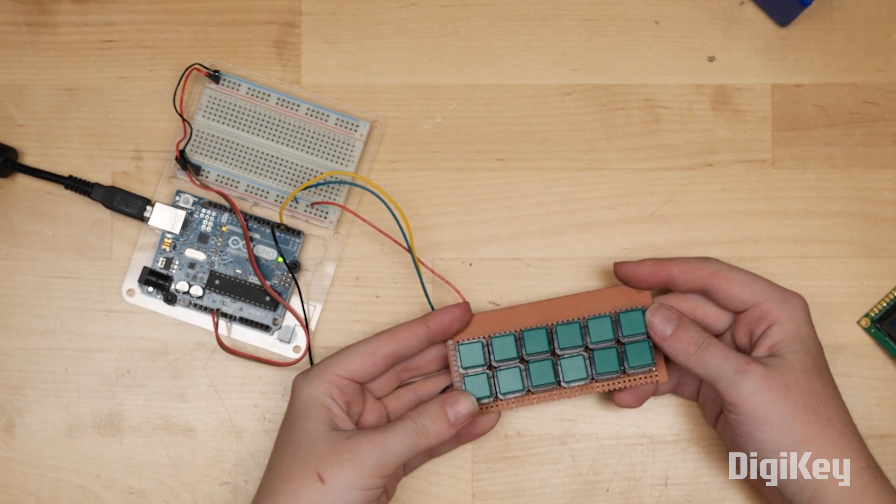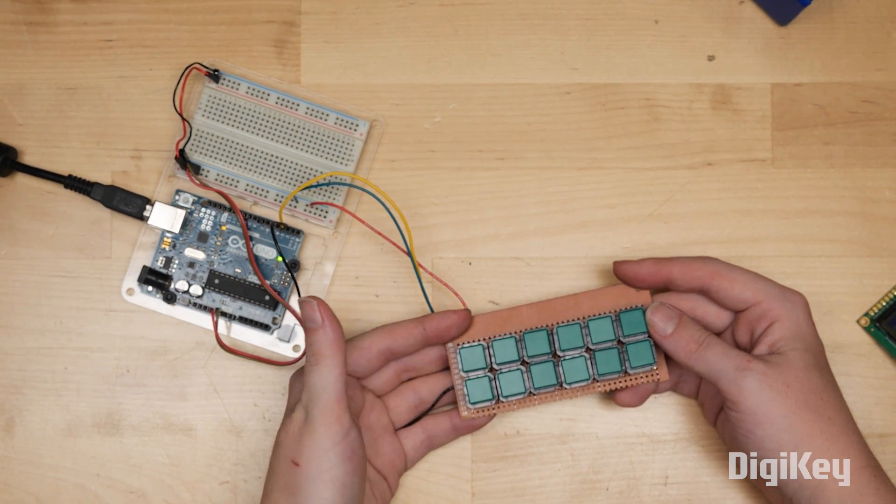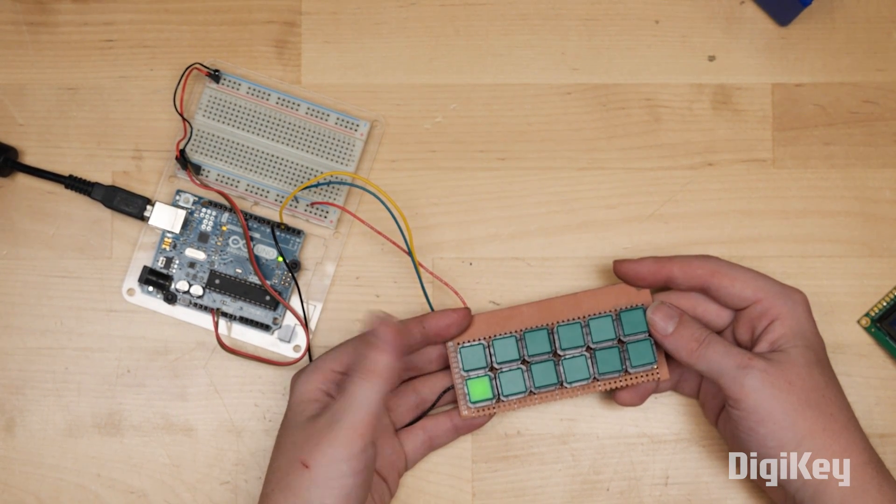Then I tested out my button panel by wiring it up to an Arduino Uno, running a simple program to toggle the LED on and off when the button is pressed.